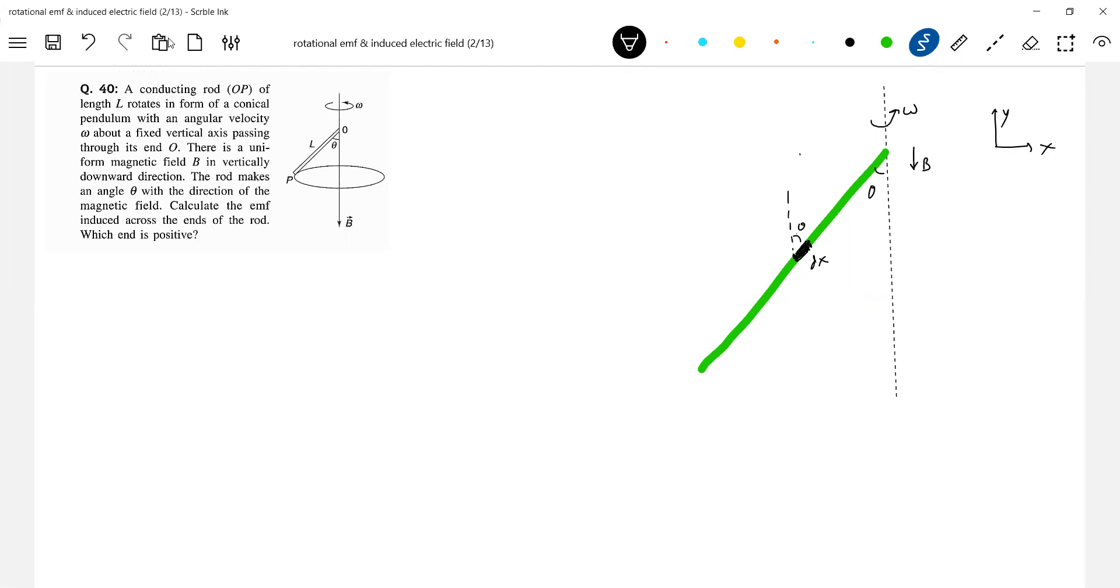So I'll resolve this: dx cos theta, dx sin theta. So dx cos theta, dx sin theta will be like this, the element. Now B bar, B bar is into the plane.